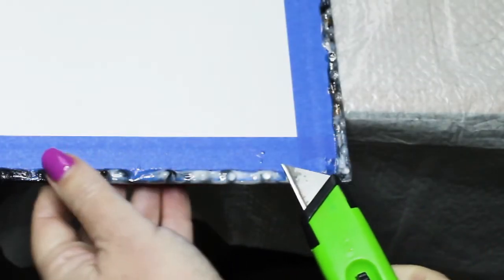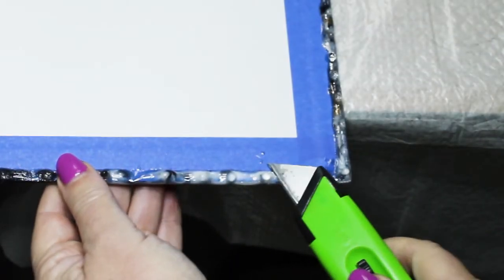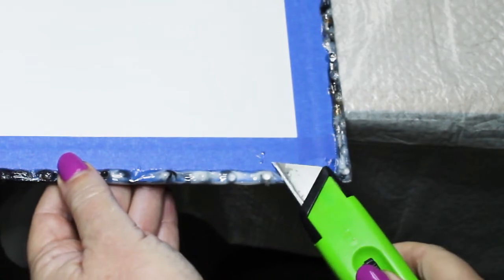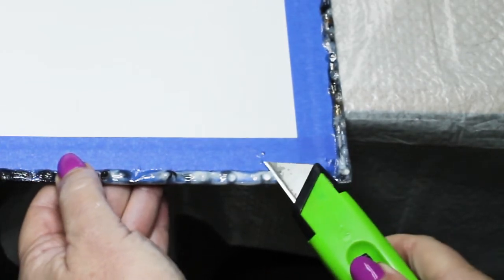So your resin art canvas has completely cured, and now it's time to remove the drips from the back of the canvas. But they're stuck to the tape and they're not coming off.